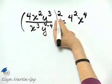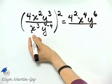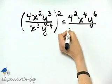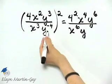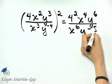y to the power of 3 times 2, 3 times 2 is 6. And then in the denominator we have x cubed squared, 3 times 2 is 6. And then be careful, y raised to the power of negative 4 times 2, that is negative 8.